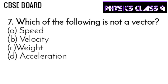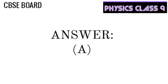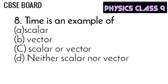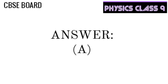If you want to do this chapter well, just read it once again. Question 8: Time is an example of scalar, vector, scalar or vector, or neither a scalar nor a vector. You should know that time is a scalar quantity, so option A is correct.